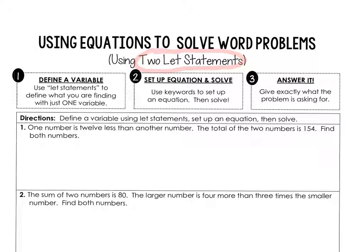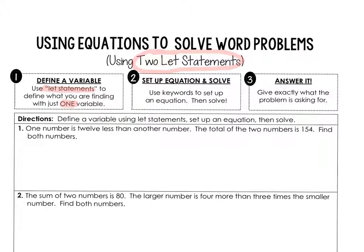First we're going to use those let statements to define what we're finding, but we're going to make sure we just use one variable. Even though we're going to be looking for two things, we're going to use one variable to define that let statement — that will make sense in just a minute. Then we'll use the keywords to set up our equation and solve our equation and then answer the problem.